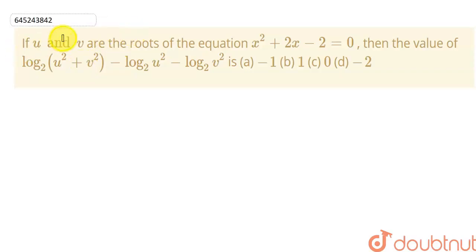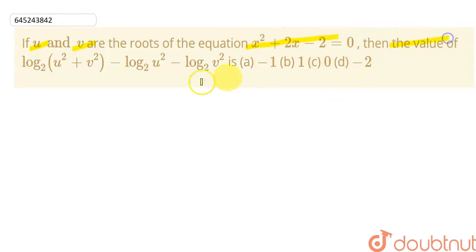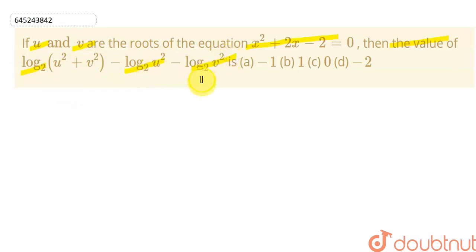In this question, we are given that u and v are the roots of the quadratic equation x² + 2x - 2 = 0, and we need to find the value of log base 2 of (u² + v²) minus log base 2 of u² minus log base 2 of v². Four options are given.